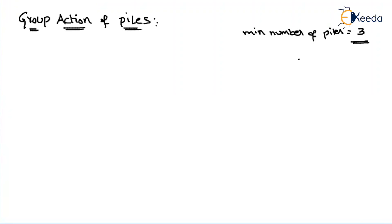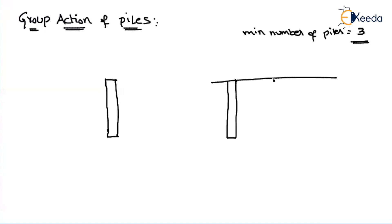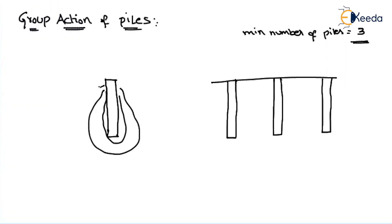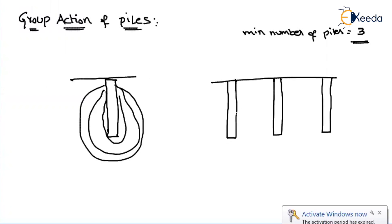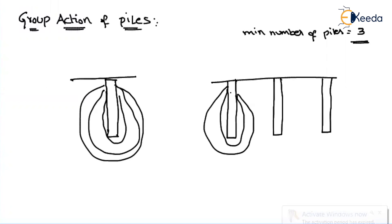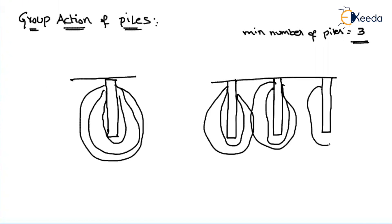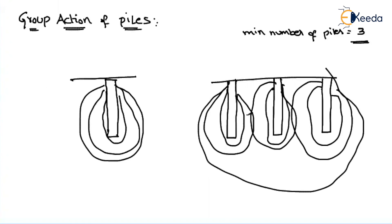The number of piles depends on the load acting on the structure. Let us assume this is a single pile, and also let us assume we have constructed a group of piles. At a particular cross-section, we can see three piles. If we talk about the stress isobars — how they will look like for a single pile versus a group of piles — we can draw them as follows. In the group action of piles, the stress isobars will overlap here.